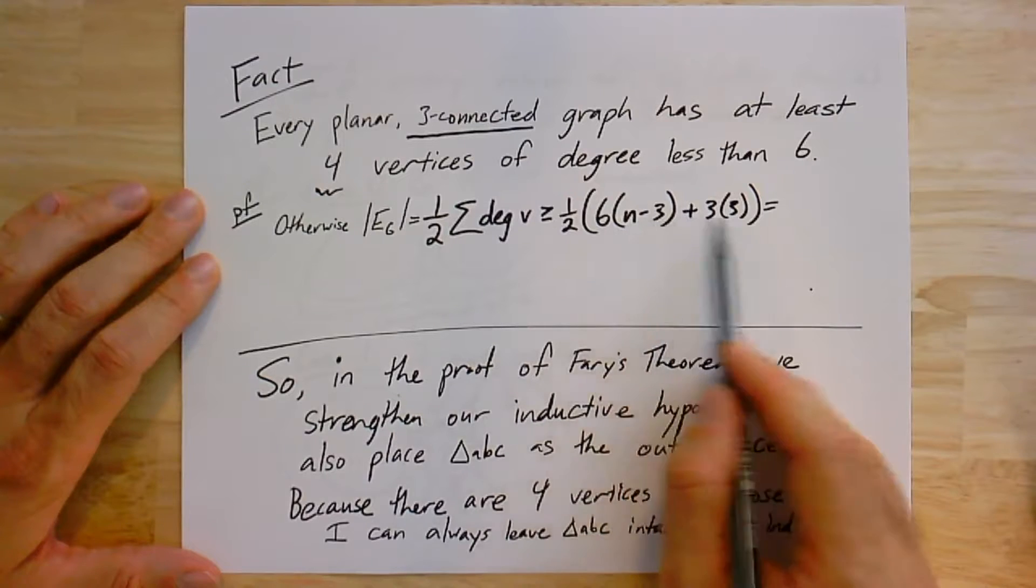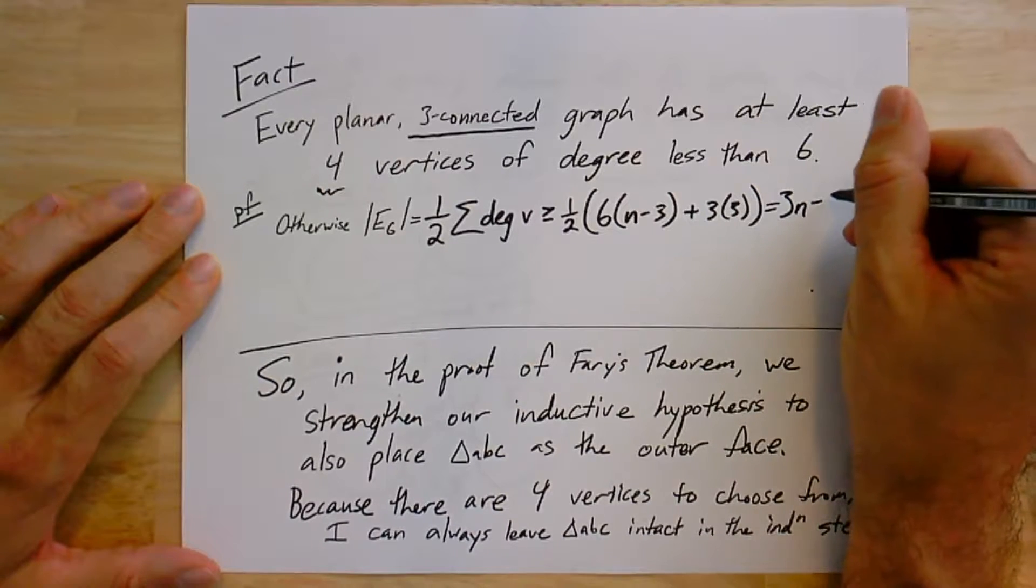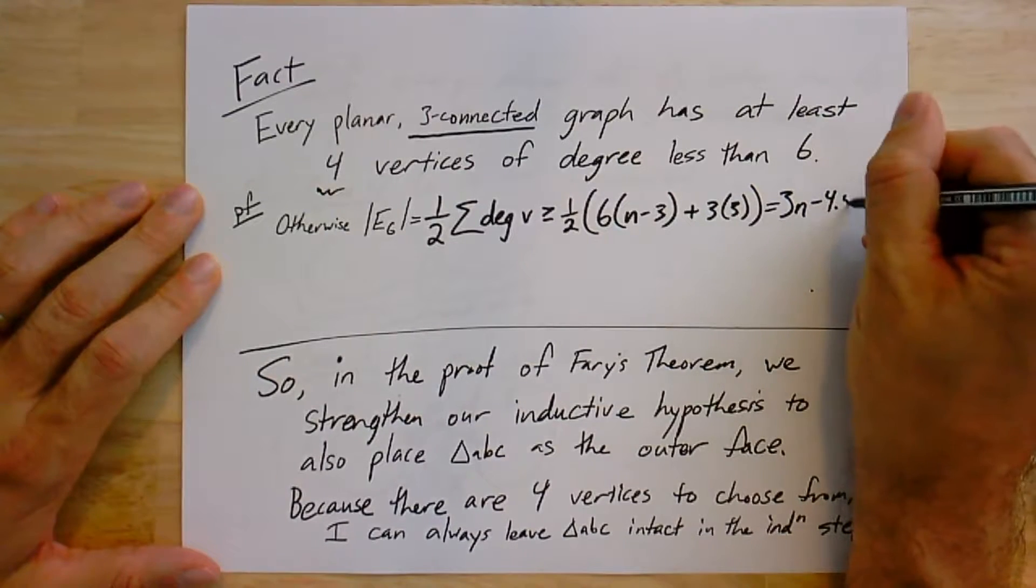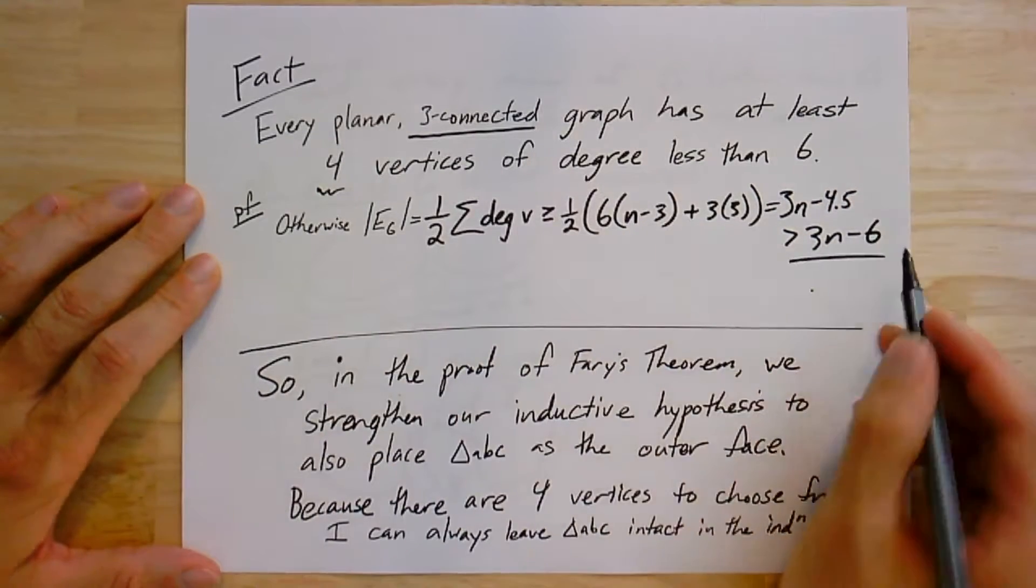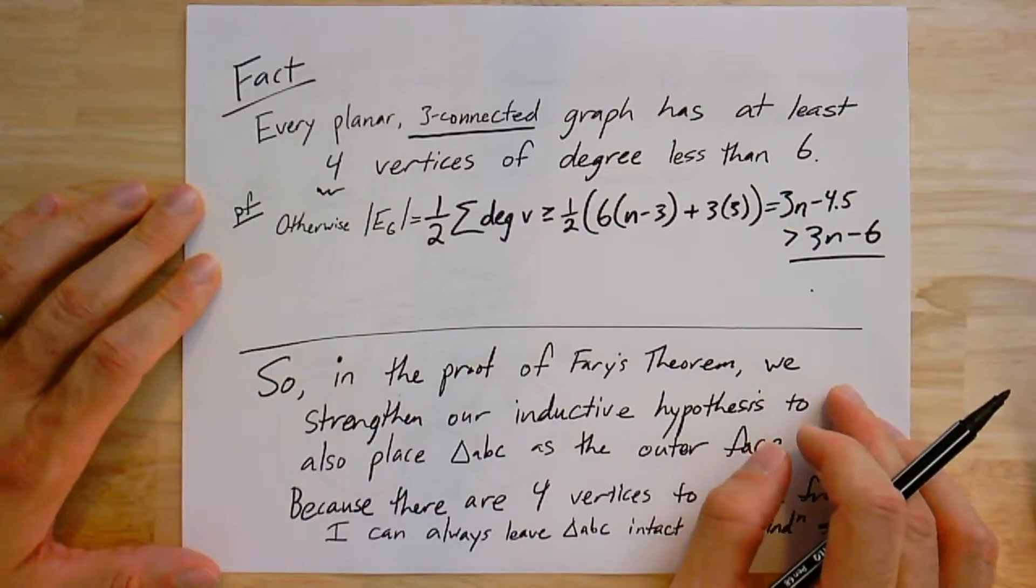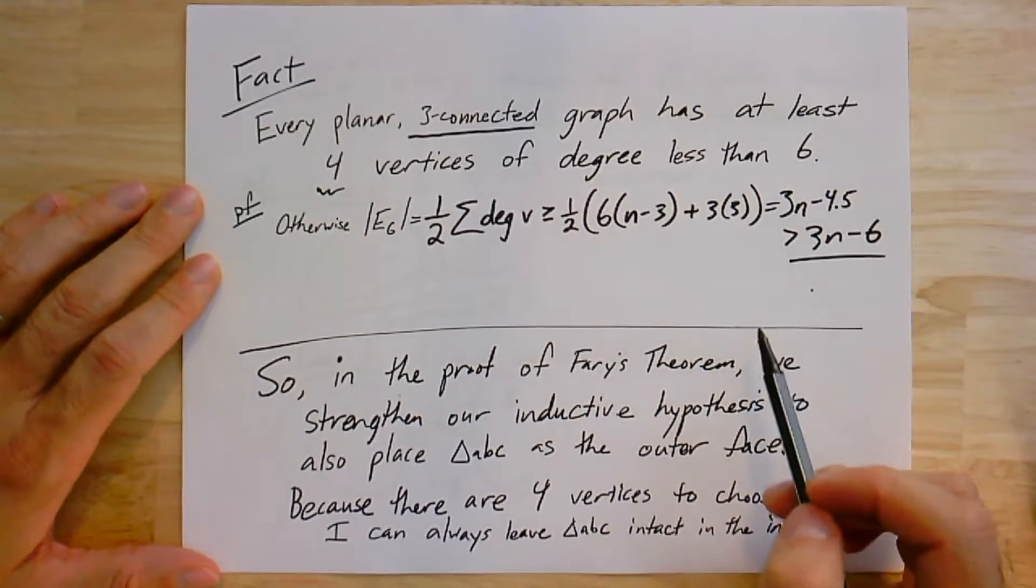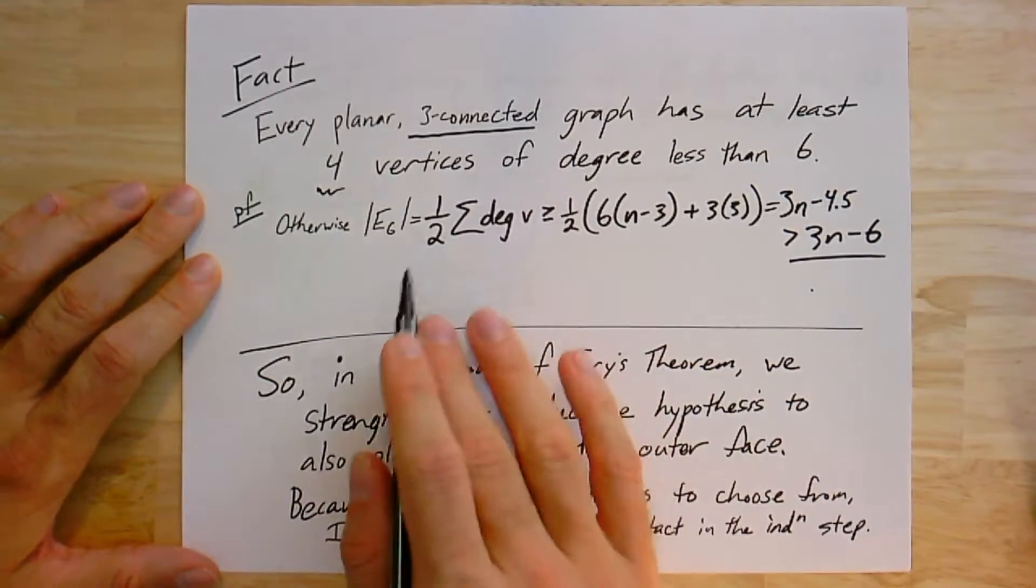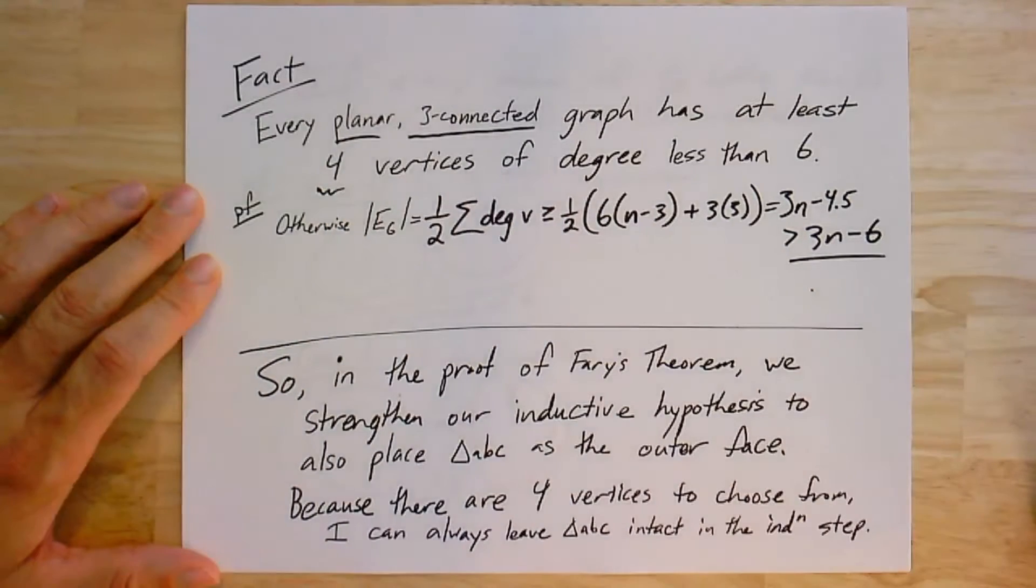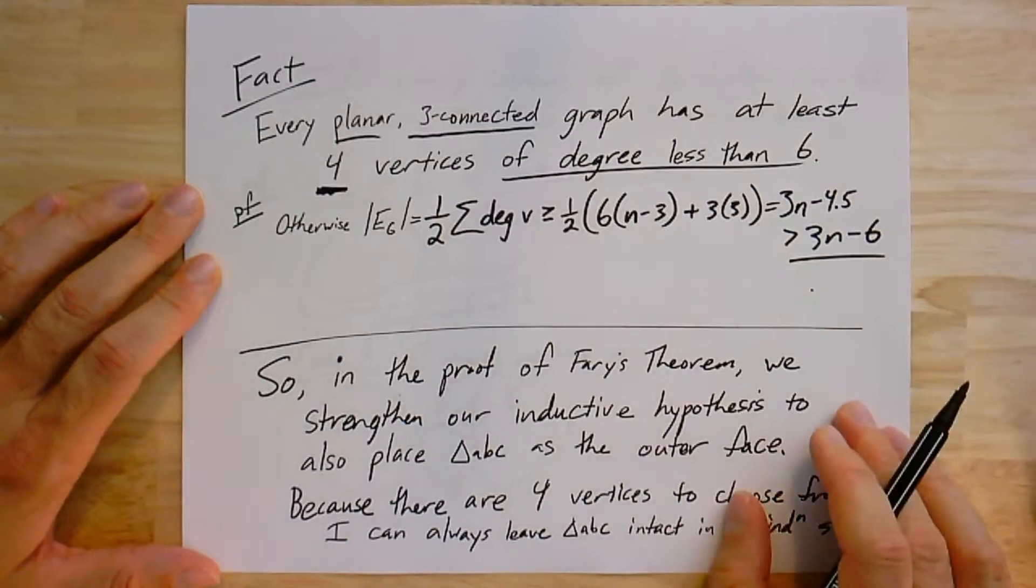At most three vertices have degree less than this, but I know they have degree at least three. So this gives me a lower bound on the sum of the degrees. If I expand this out, I get 6n minus 18 plus 9, that's 6n minus 9, which is 3n minus 4.5, which is strictly greater than 3n minus 6. But that's not possible, because planar graphs have at most 3n minus 6 edges. Maximal planar graphs have exactly 3n minus 6. Here I had somehow more than that, which is impossible. So that implies the graph was not planar, which is a contradiction.